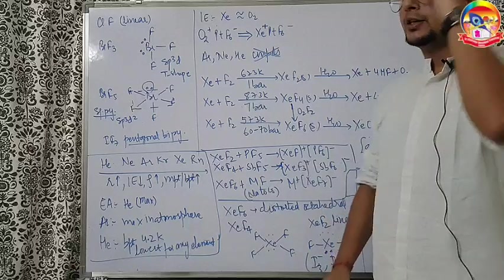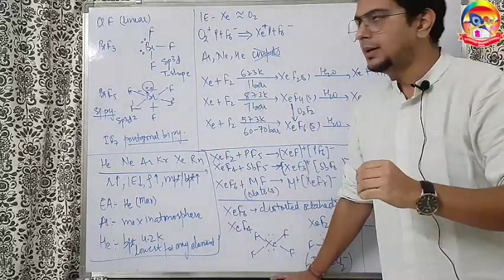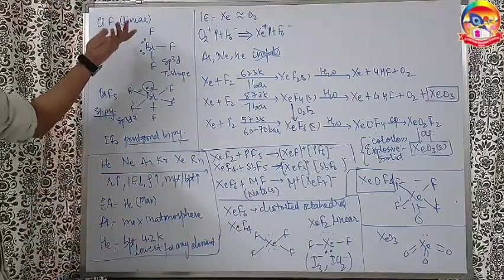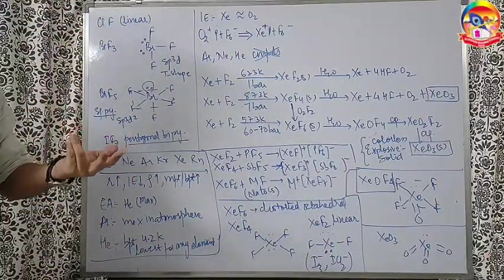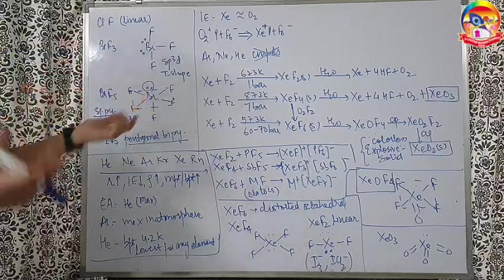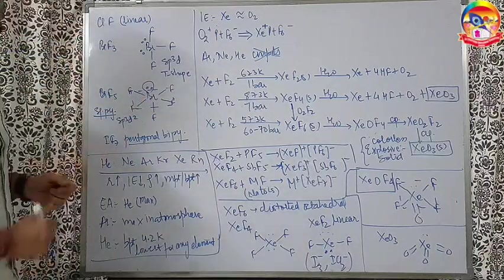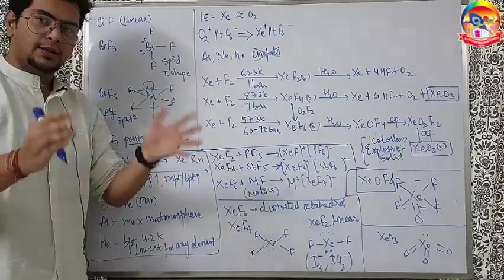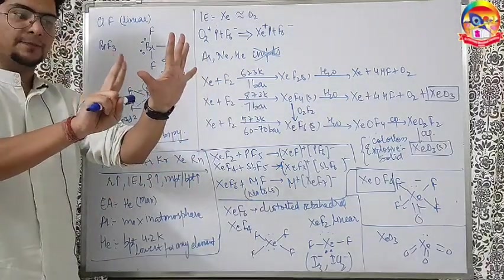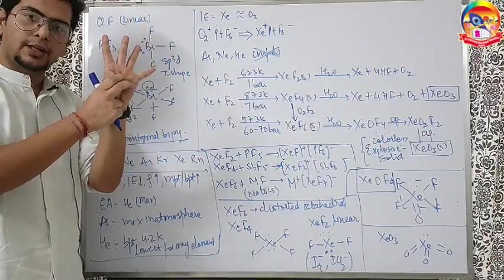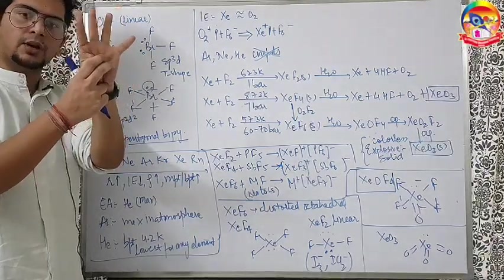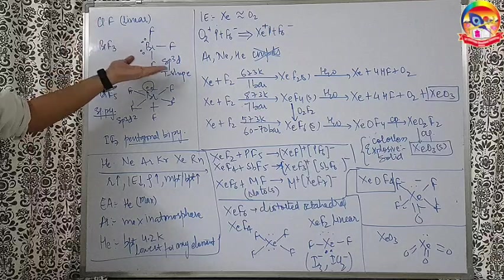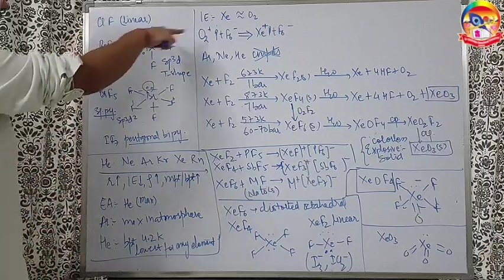Let us enter into the last segment of the P block. Starting from the structures of the interhalogen compounds. ClF is linear because two atoms are there. Talking about BrF3, in BrF3, fluorine will form only single bond. Bromine has seven electrons in the last shell. Three bonds formed by fluorine. So, three electrons consumed. Four left. So, two lone pairs will come. Three sigma bond will come. Hybridization SP3D will come and T-shape. Clear cut T-shape you can see there.